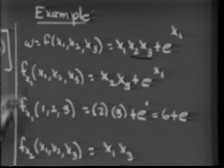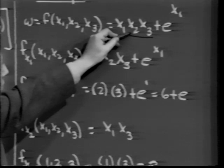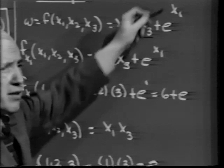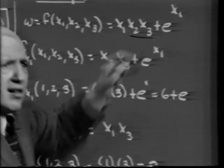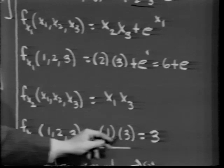On the other hand, if I differentiate with respect to x2, I treat x1 and x3 as constants. The derivative of x1·x2·x3 with respect to x2 is x1·x3, and the derivative of e^x1 with respect to x2 is 0, since e^x1 is constant once x1 is fixed. So f sub x2 equals x1·x3. Evaluated at (1, 2, 3): that's 1·3 = 3.